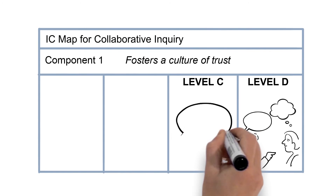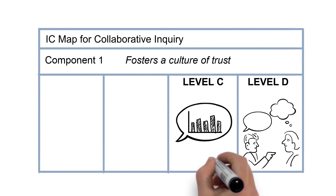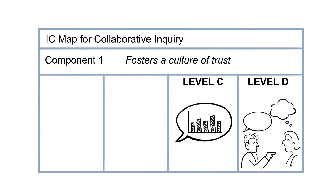At Level C, the members have moved away from blaming one another and into more constructive conversations focusing on data. A protocol was developed and members of the group are adhering to meeting norms. They are cordial, but may not yet have a deep level of trust.